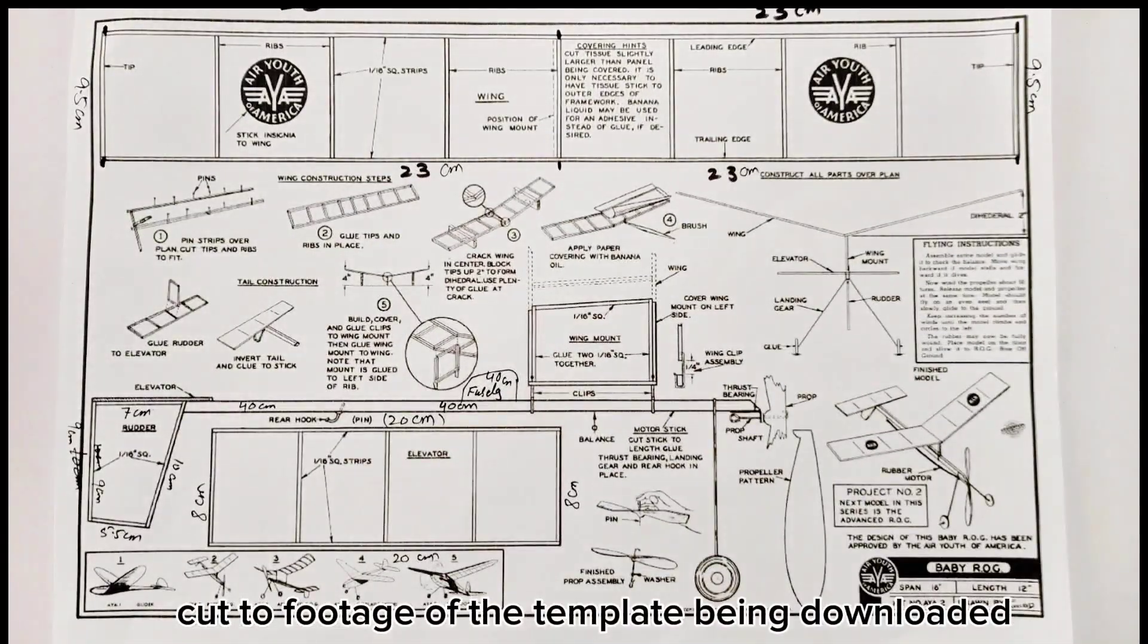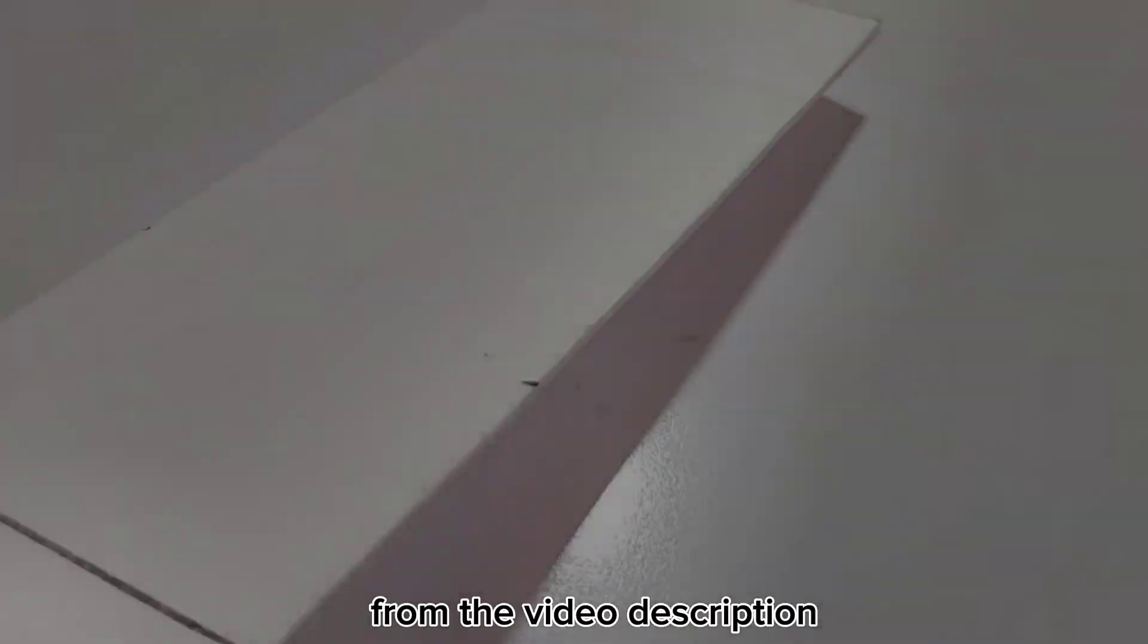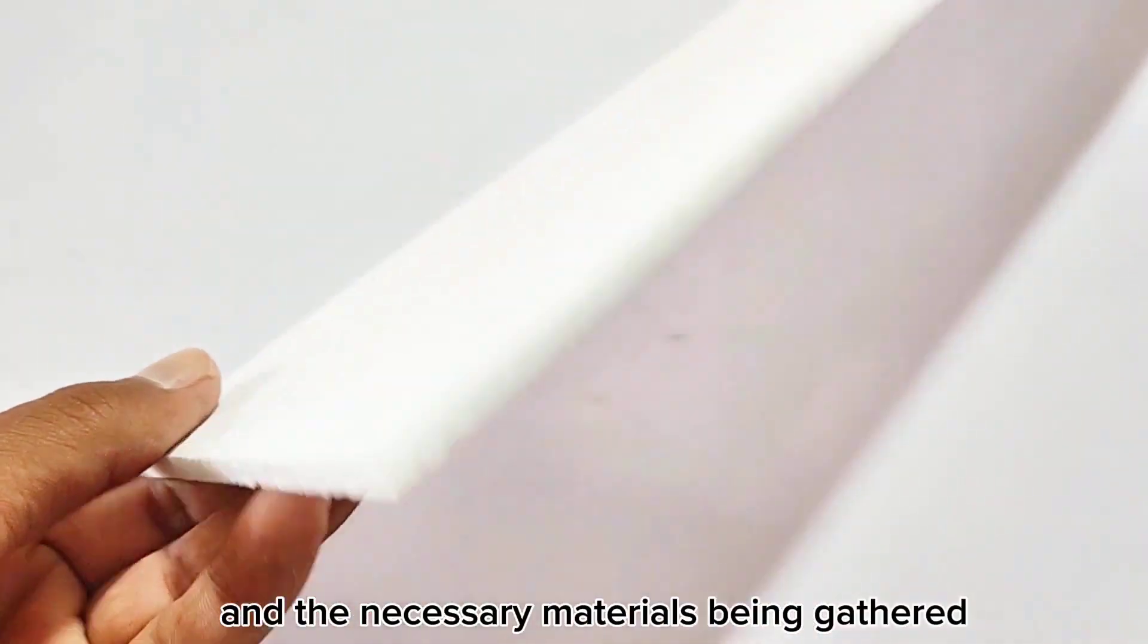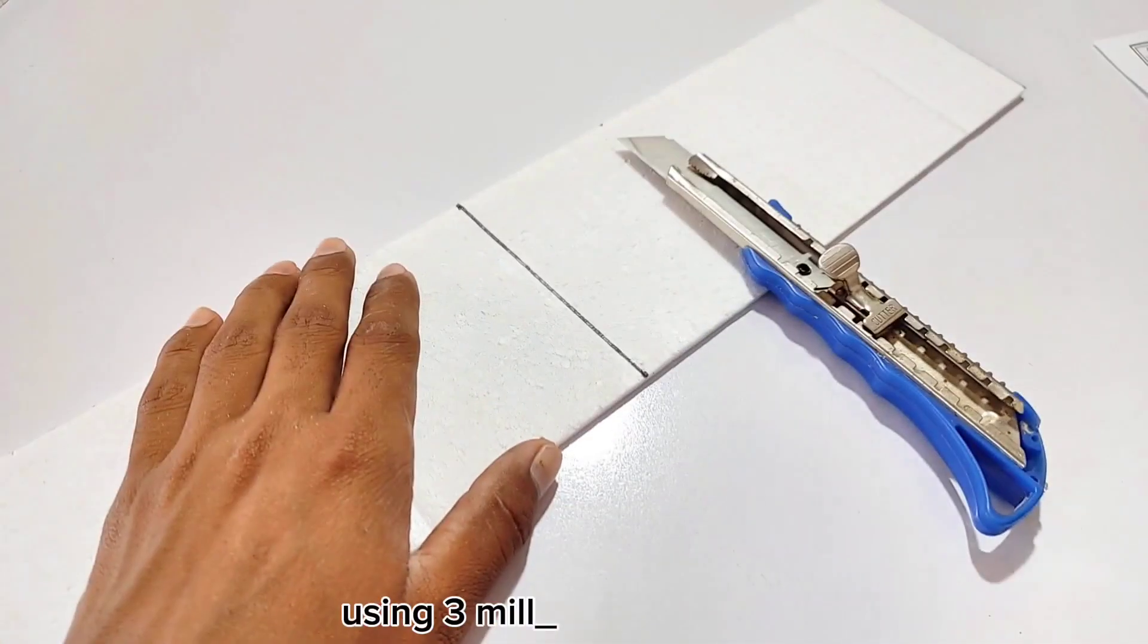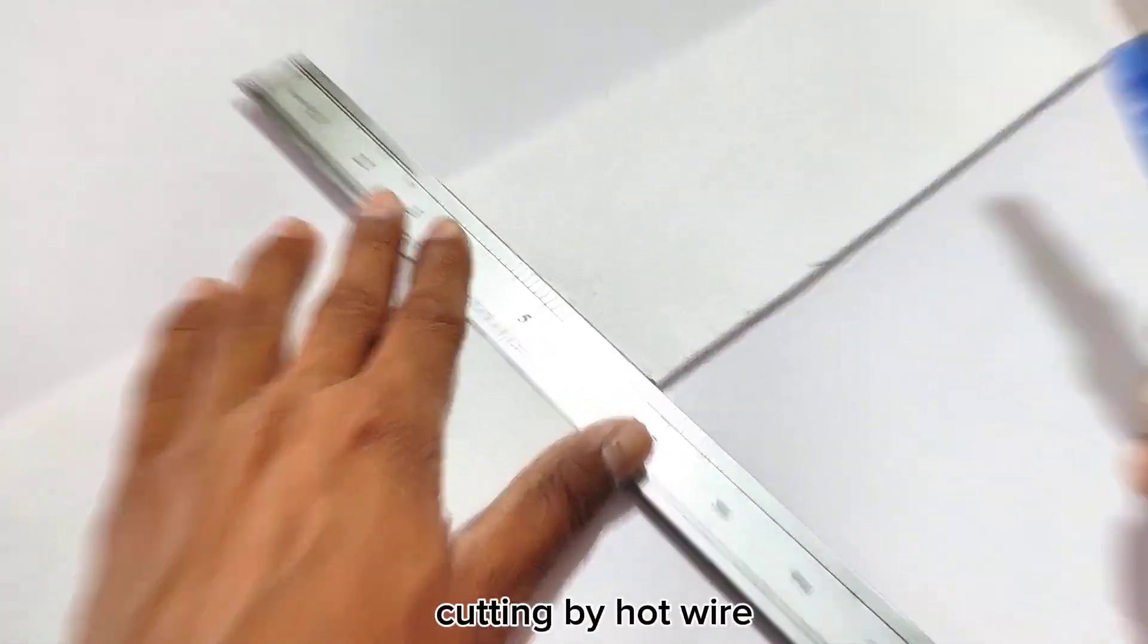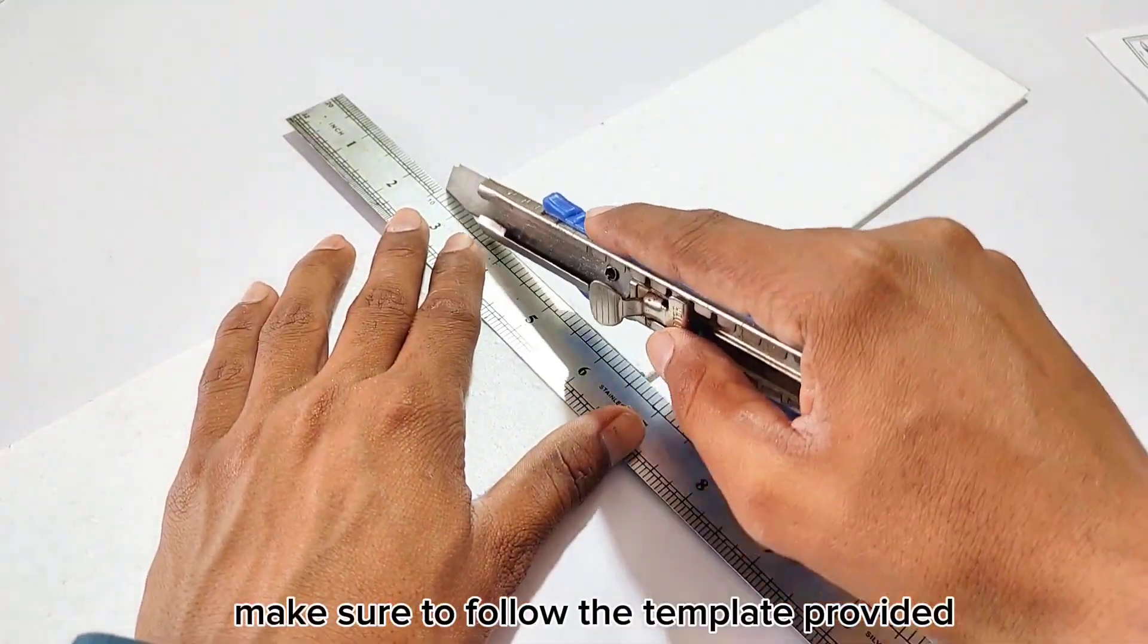Cut to footage of the template being downloaded from the video description and the necessary materials being gathered. First, we'll start by cutting the wing part of the plane using 3mm styrofoam cutting by hot wire. Make sure to follow the template provided.